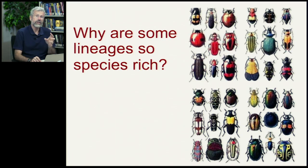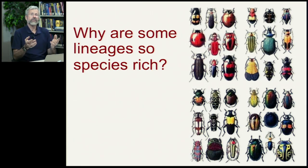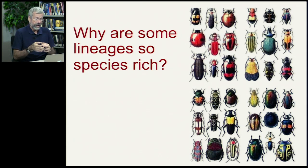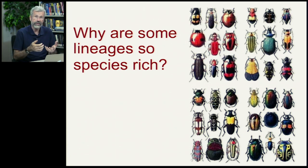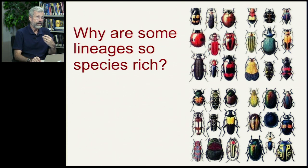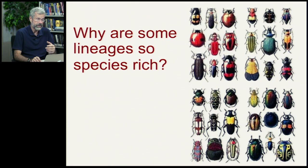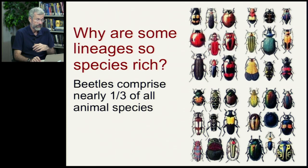One of our organizing questions today is to contrast different taxonomic groups. We've seen that there are phenomenal numbers of insects and especially of the beetles. So why is it that some evolutionary lineages are so species-rich, with literally hundreds of thousands of different species? Beetles comprise nearly a third of all animal species.